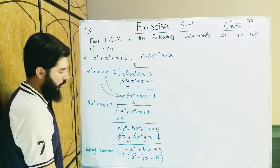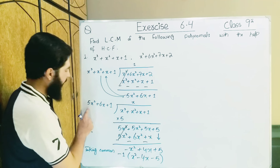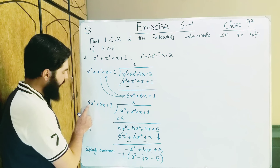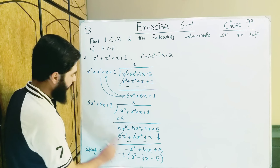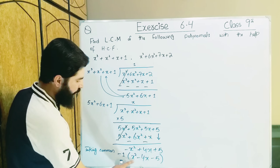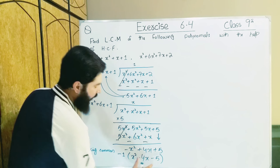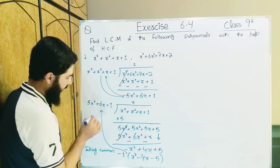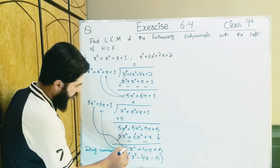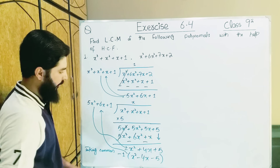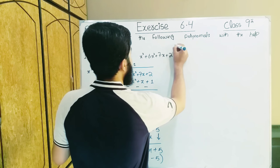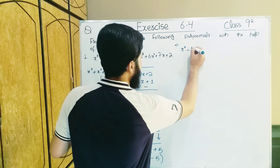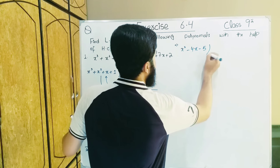Now again, the inside value has become small and outside is big. Look: 5x² vs x² — same degree, but here there is a 5, so 5x² is bigger and x² is smaller. We need the inside to be bigger and outside smaller, so we replace again — taking what was inside outside. The inside value becomes: x² − 4x − 5.